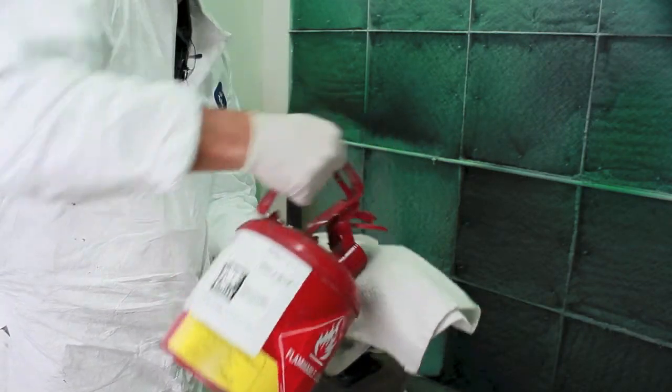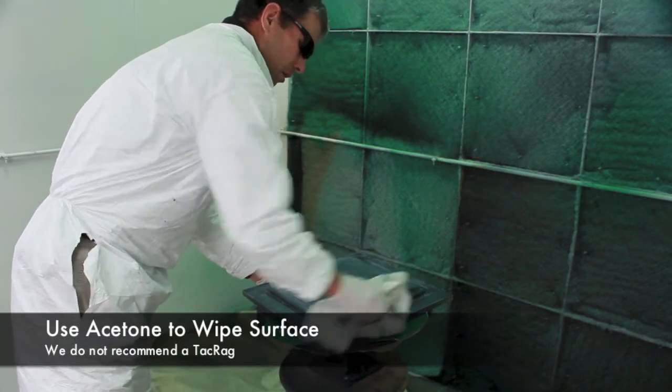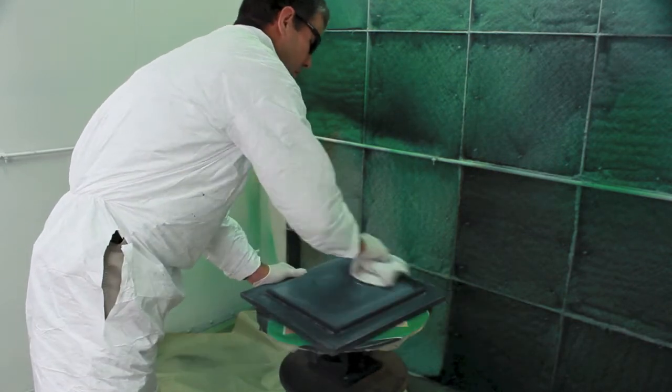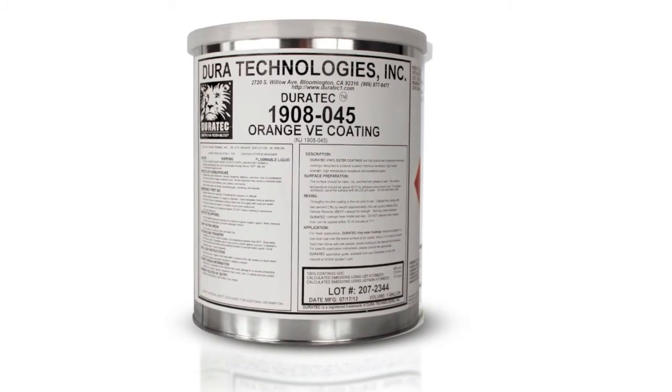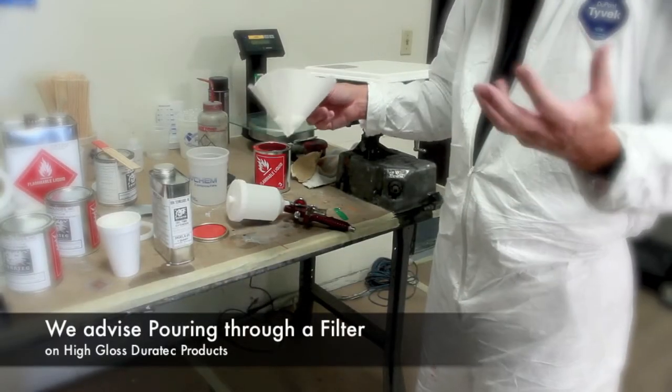We've already sanded the surface primer, and now we're wiping it down with acetone. We recommend that you don't use a tack rag for this. We'll be spraying the Orange Vinyl Ester High Gloss Top Coat. After shaking up the Duratec, we recommend that you pour the High Gloss products through a filter before you use it.